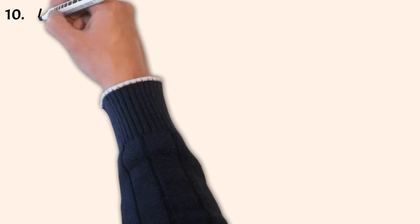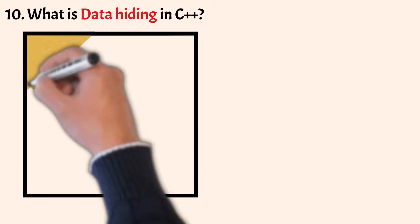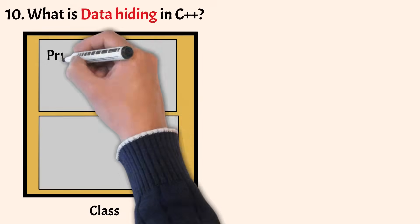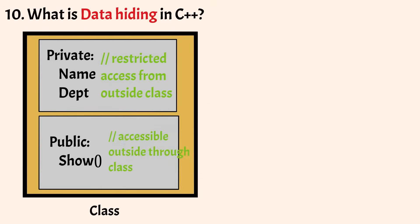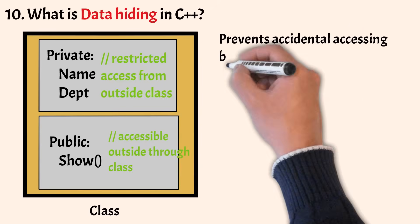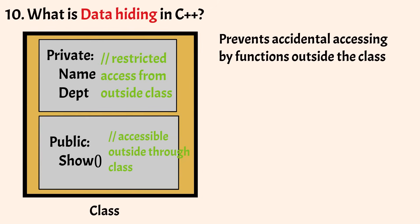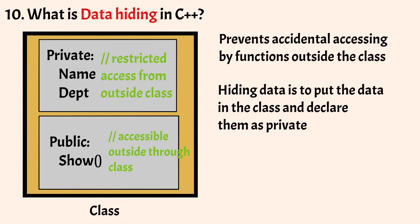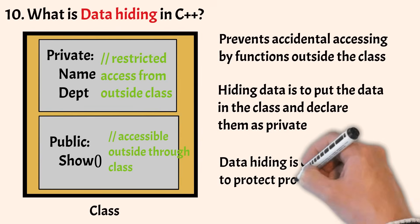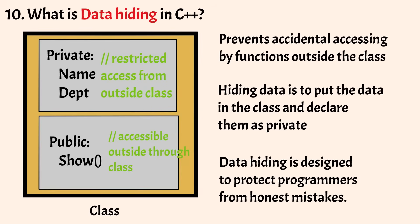Now let us understand what is data hiding in C++. Data hiding means the data are concealed within a class so that it prevents accidental access by functions outside the class. The primary mechanism for hiding data is to put the data in the class and declare them as private. Private data and functions can only be accessed from within the same class. Data hiding is designed to protect programmers from honest mistakes.